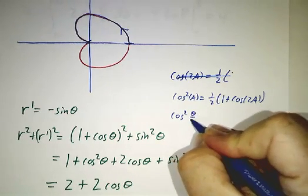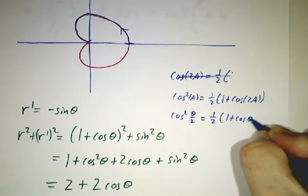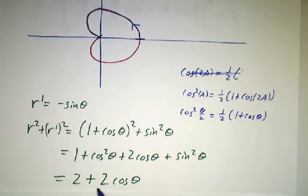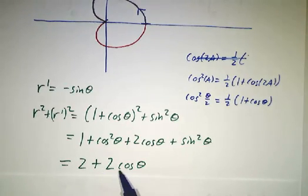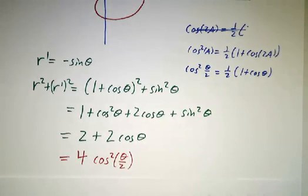So cos squared θ over 2 is 1 half of 1 plus cos θ. Now here we don't have 1 half of 1 plus cos θ. We have twice 1 plus cos θ. So we get 4 cos squared θ over 2.